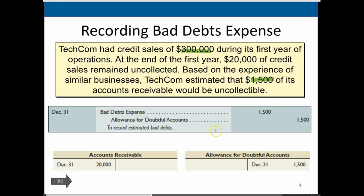Therefore, when we create the financial statements we're going to set up an allowance for bad debt, which is a credit — it's a contra asset account. Instead of reducing the receivable directly, we can't do that because we don't know who's not going to pay us. We can't apply it to the subsidiary ledger by customer. But we think $1,500 of people will not pay us, so we create this contra asset account with a credit balance. Then we record the expense in the matching time period via a journal entry.